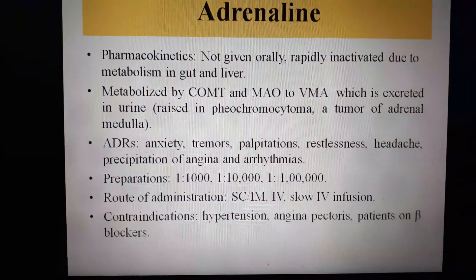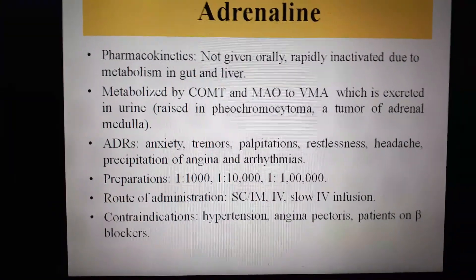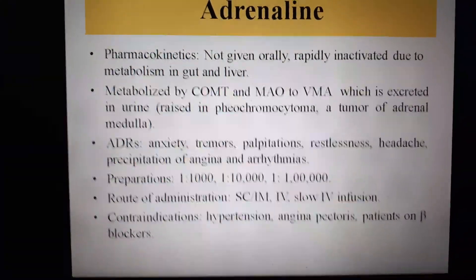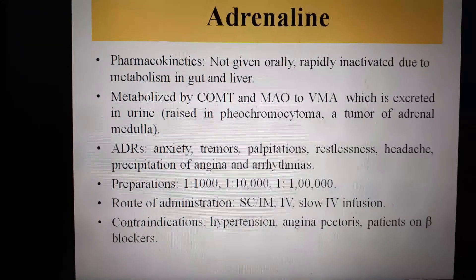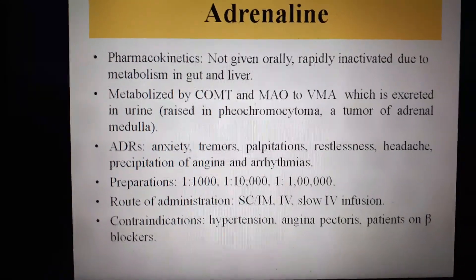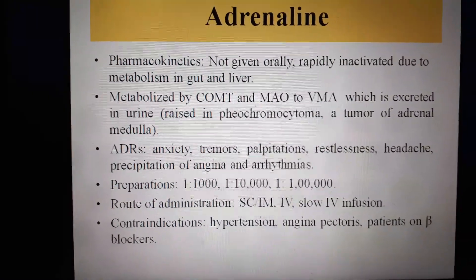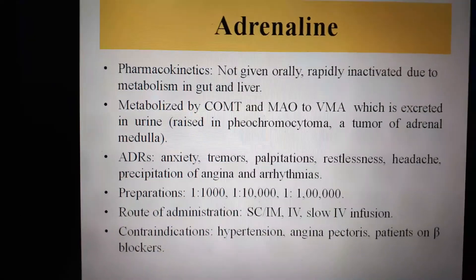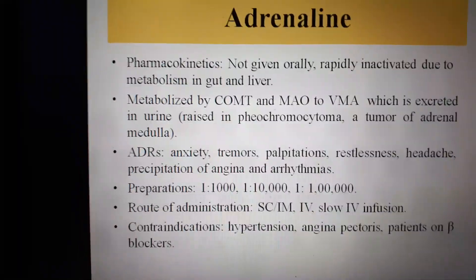Preparations: Adrenaline is used in concentrations of 1:1,000, 1:10,000, and 1:1,00,000. Route of administration: it is given mainly by subcutaneous or intramuscular route in the 1:1,000 concentration; by IV route at 1:10,000; and by slow IV infusion at 1:1,00,000. Contraindications include hypertension, angina pectoris, and use in patients on beta-blockers.